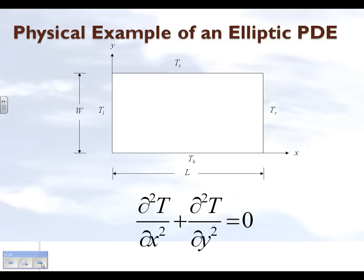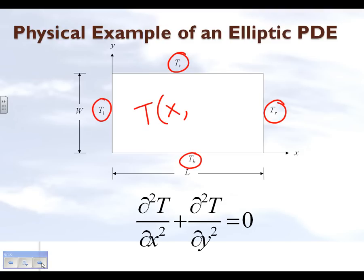What we're going to do is take the same example we've been using for the other ways of solving elliptic partial differential equations numerically. We are looking at a rectangular plate, and the temperatures on the edges of this rectangular plate are given. What we want to do is find out what the temperature will be inside this plate as a function of x and y.